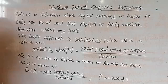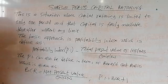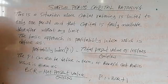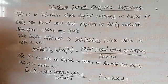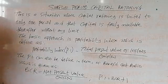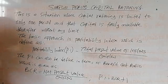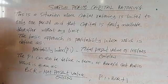I would define capital rationing as a limitation of funds, either by internal factors or external factors. The internal factors — which normally is soft capital rationing — is a situation whereby the management of an organization puts limits on the cash flow of the company. That is, we don't want to spend beyond a particular amount of money in a given period. If such a scenario arises, it is defined as internal or soft capital rationing.